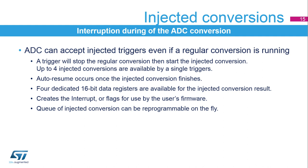The injected conversion result is stored in dedicated data registers. Flags and interrupts are available for the end of conversion or end of sequence. The choices for an injected channel can be reprogrammed on the fly. Even if a regular or injected conversion is in progress, you can add a different channel to the queue so that the next injected channel can be different from the previous one.